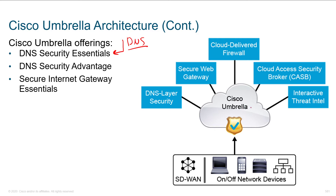DNS Security Advantage is a bit more powerful. It can block direct IP connections that would otherwise bypass DNS — instead of using a domain name, someone might just connect directly to an IP address, but Security Advantage includes an IP blacklist. It also includes the Intelligent Proxy, which has the capability to analyze unknown traffic — anything risky or unknown can be SSL-decrypted, have AMP applied, and undergo content-aware inspection. This is getting smarter.